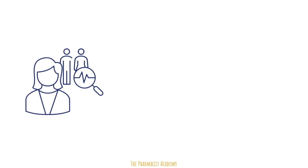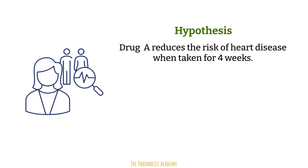Just like a judge's conclusion, a researcher's conclusion may be wrong sometimes. Research trials start with a hypothesis, which is a statement that the researcher is trying to prove. For example, drug A reduces the risk of heart disease — basically proposing that there is a relationship between drug A and heart disease.